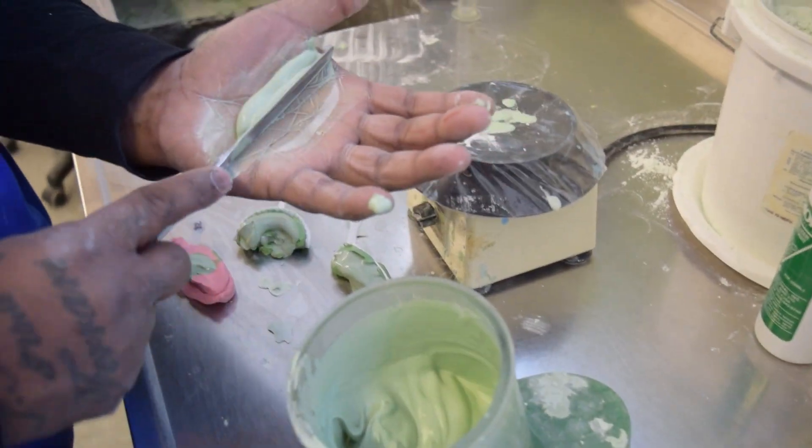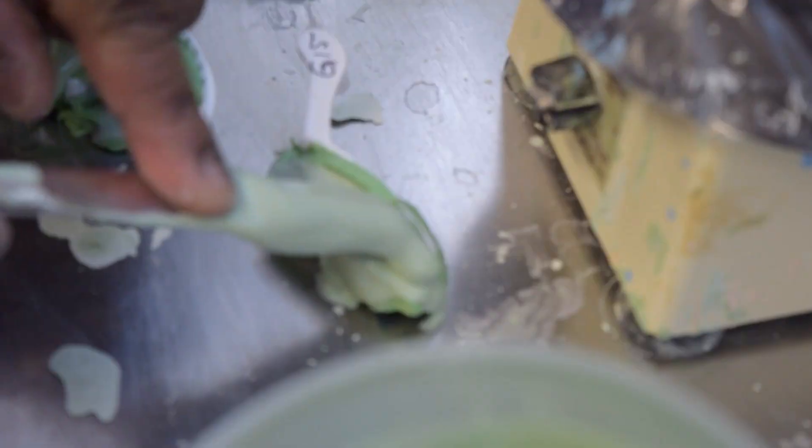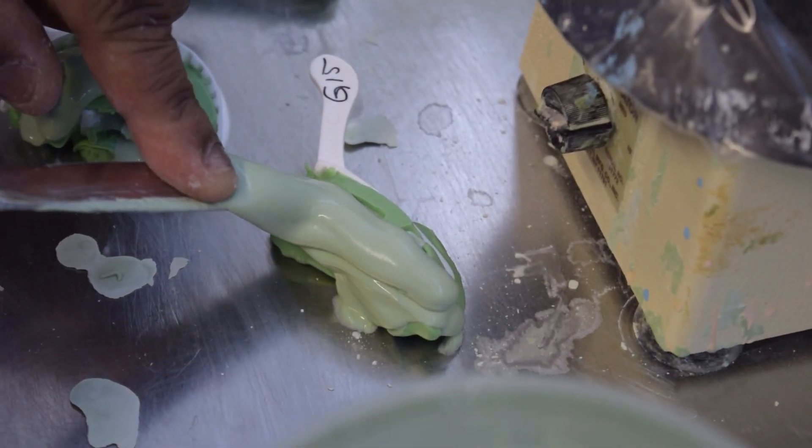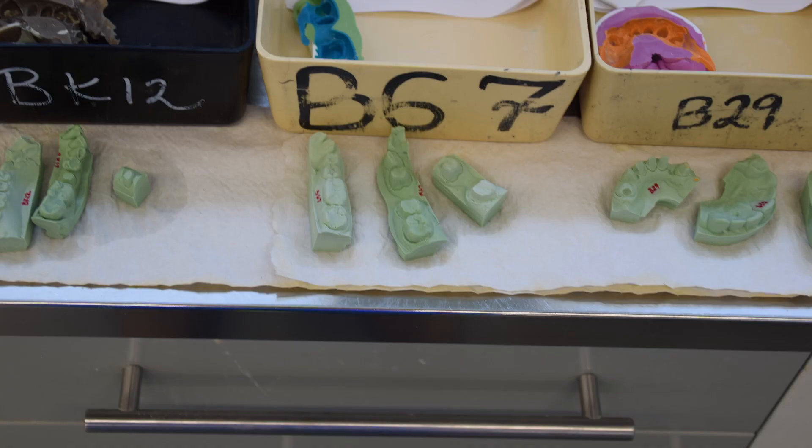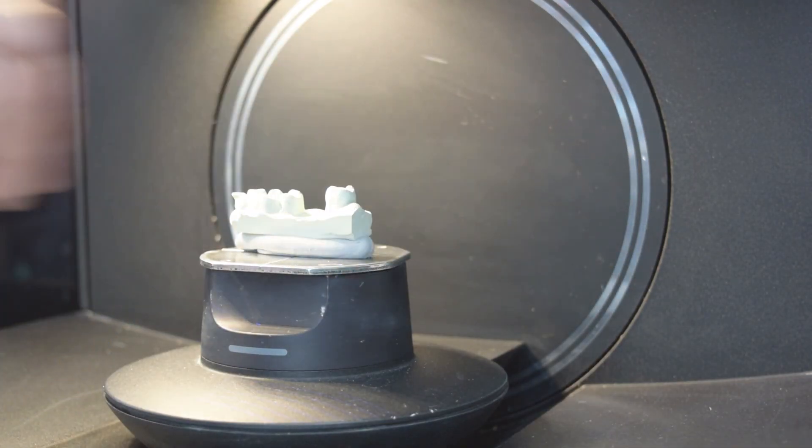An ill-fitting crown can lead to pain, chewing abnormalities, and potential for bacteria to enter the area under the crown. This can lead to infection, abscesses, and the need to remove the tooth entirely.